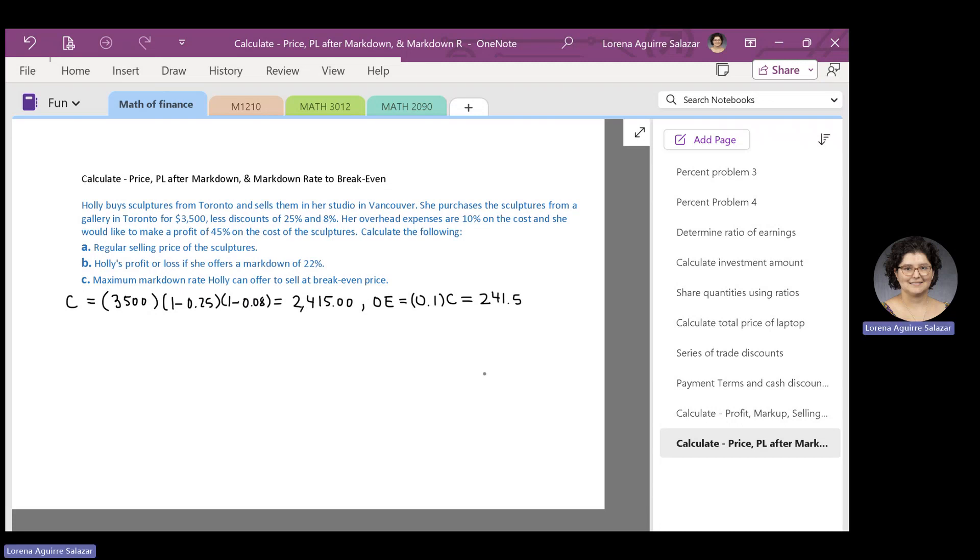Next, they tell us about the profit that Hoed would like to make. We have that profit equals 45% of the cost of the sculptures. We can write profit equals 0.45, that's the decimal equivalent of 45%, times the cost of the sculptures. So, we multiply 0.45 by $2,415, and that gives us the number $1,086.75 cents.